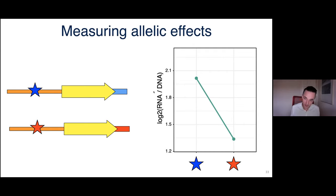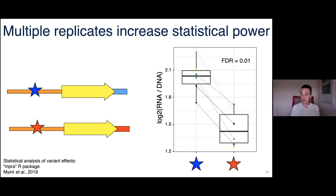We bulk-cloned and annotated the library, put it on a low-copy plasmid, transformed the plasmid into yeast, grew the culture in bulk, then extracted RNA and DNA. The DNA normalizes for different representation of oligos in the library. We pulled out the barcodes by PCR, sequenced them on an Illumina instrument, and counted them.